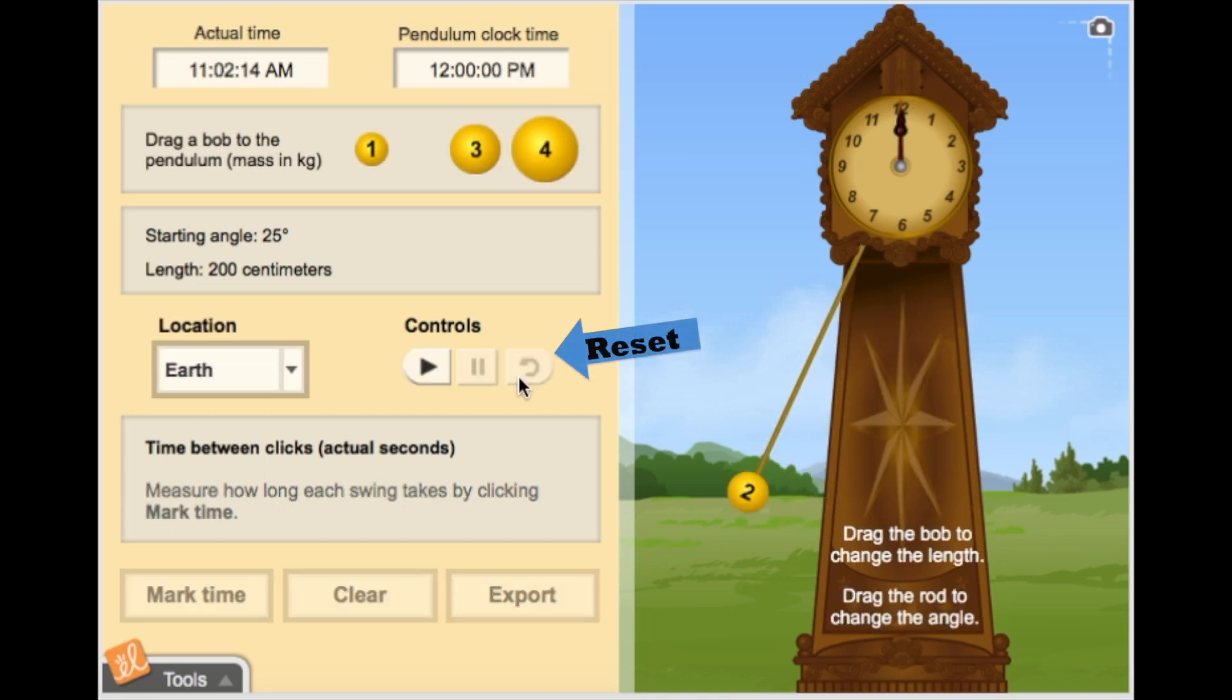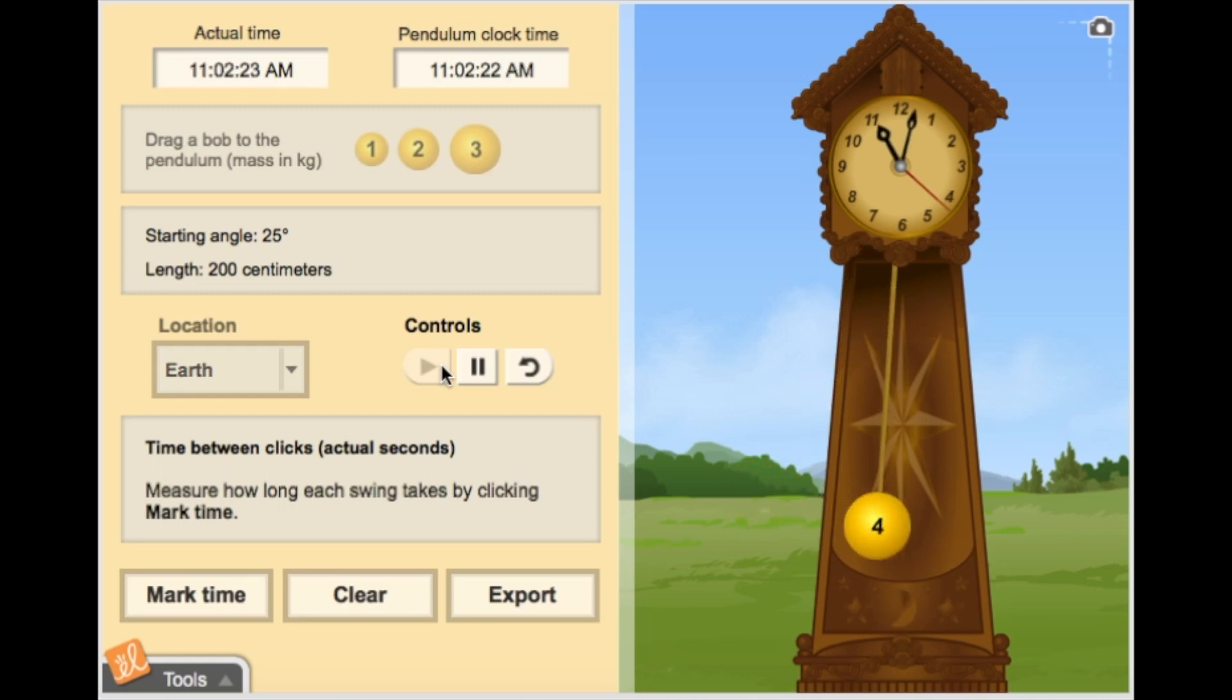Let's now press the back arrow and drag a new bob to the end of the pendulum. This bob has a mass of 4 kilograms. What happens when we click play again?